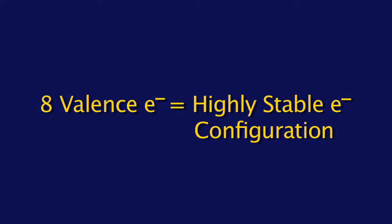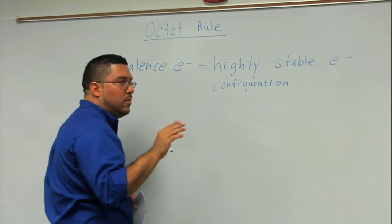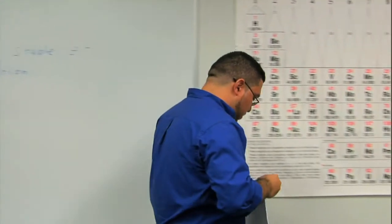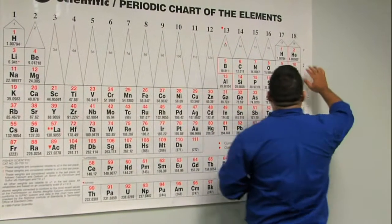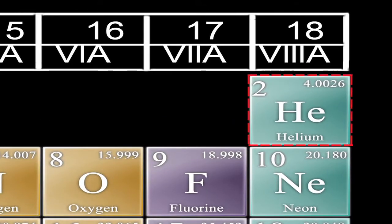So, 8 valence electrons gives you a highly stable electron configuration, except for one element, which we should mention briefly. That would be helium. If you look at helium, it only has 2 valence electrons, but yet it is a Noble Gas. So, do be aware that helium doesn't have 8 valence electrons.